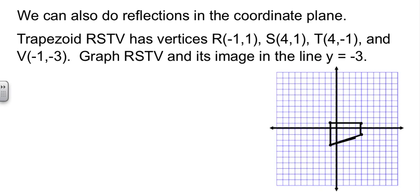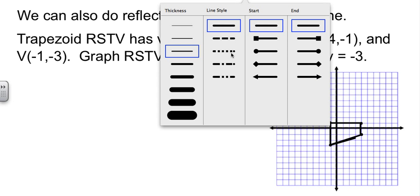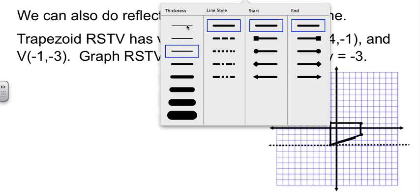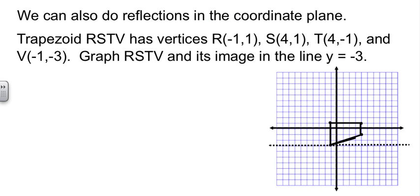Now, we are reflecting in this other line, the line y equals negative 3. Well, that line is right here. That line goes right across here. That's what we want. So now we're going to reflect our points across this line. Our first point is actually on that line, so we leave it alone.